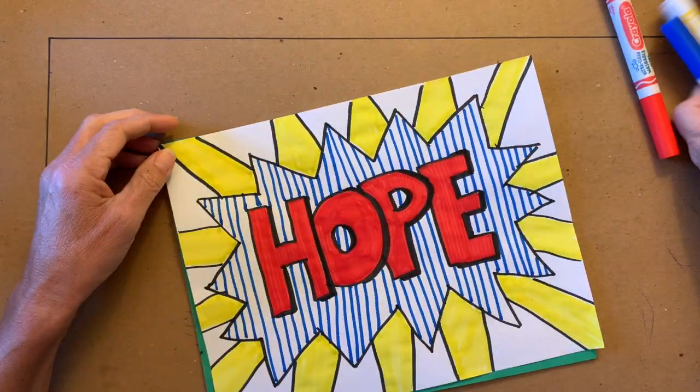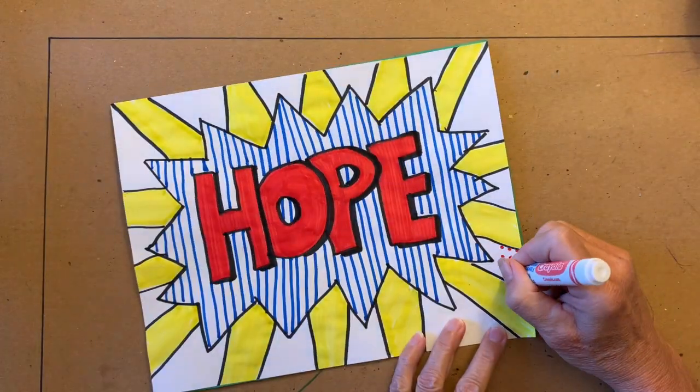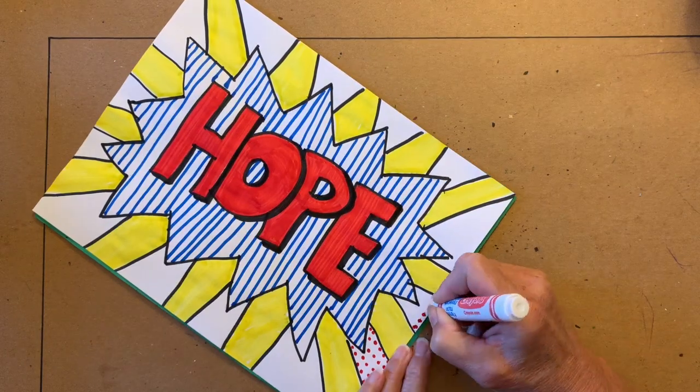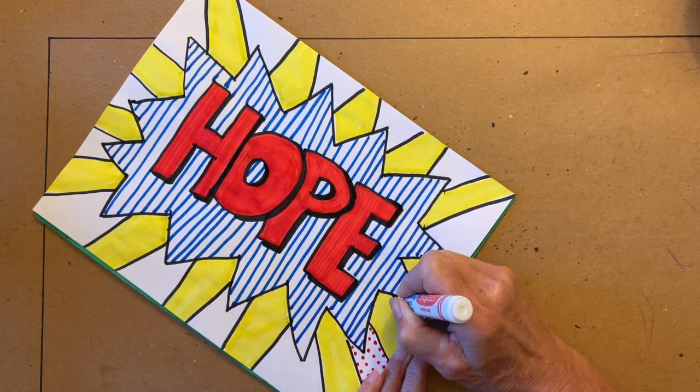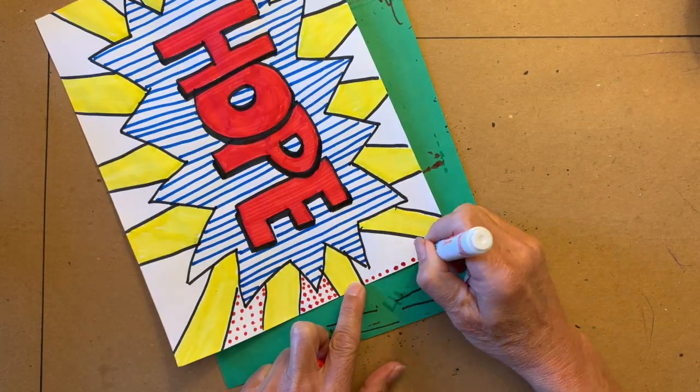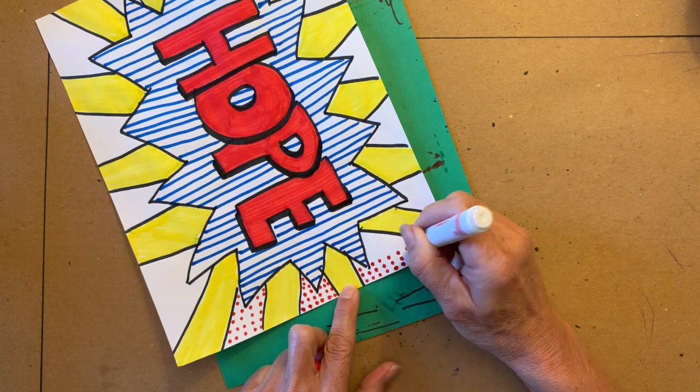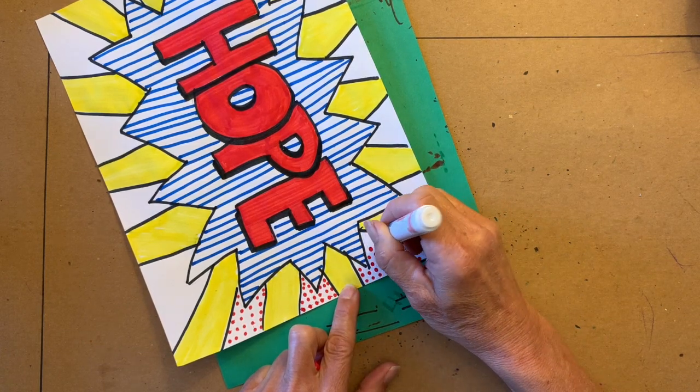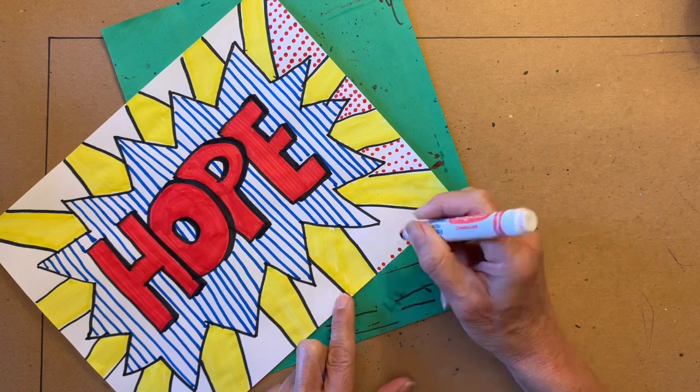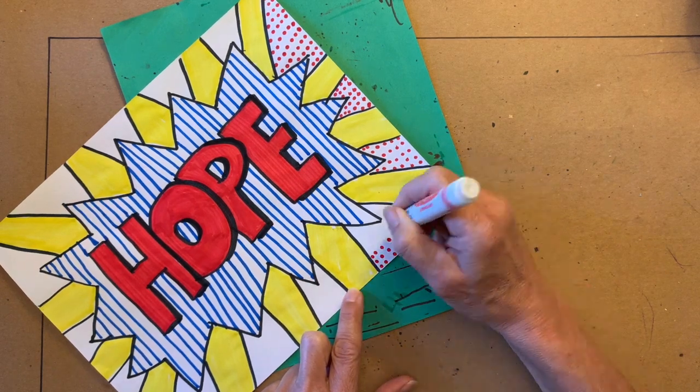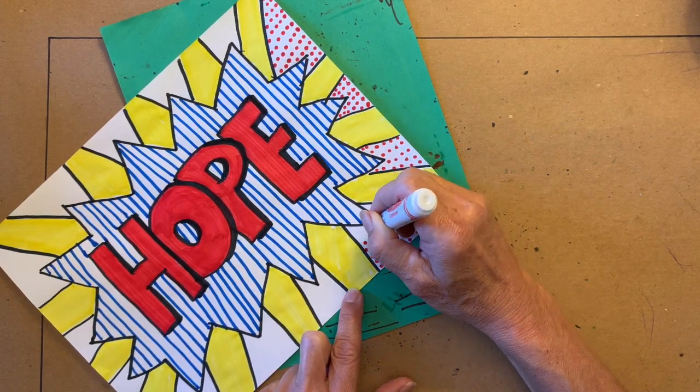I filled in the remaining white space with red dots to represent the Benday dots Lichtenstein was known for using in his artwork. Benday dots were used in comic books in the 1950s to 1970s to add color and shading.